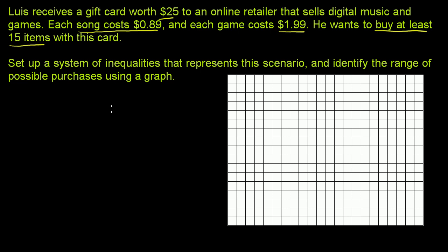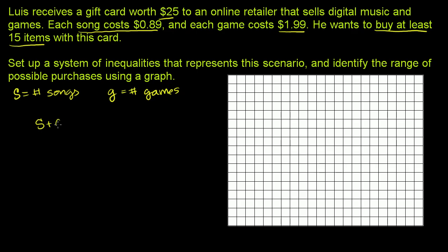Let's define some variables. Let S equal the number of songs he buys, and let G equal the number of games that he buys. Looking at this constraint — he wants to buy at least 15 items — the total number of items is the number of songs plus the number of games, and that has to be greater than or equal to 15.